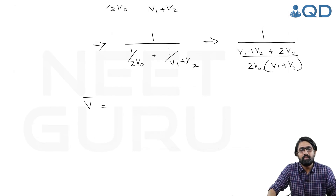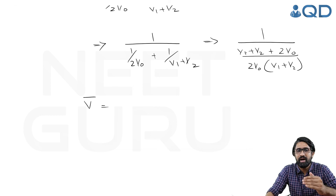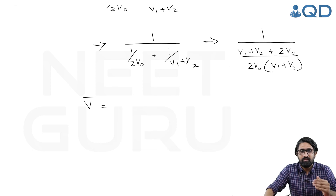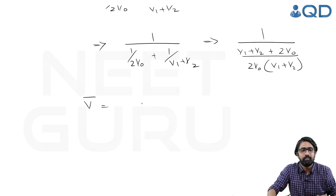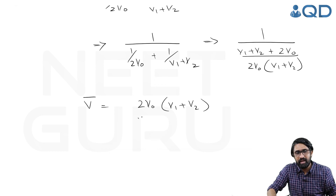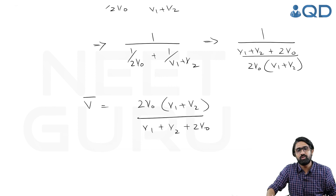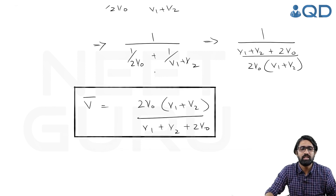Finally, v-bar equals the reciprocal of that fraction, which is 2v0(v1 + v2) divided by (v1 + v2 + 2v0). This is the final answer for the mean velocity of the point averaged over the whole time of motion.